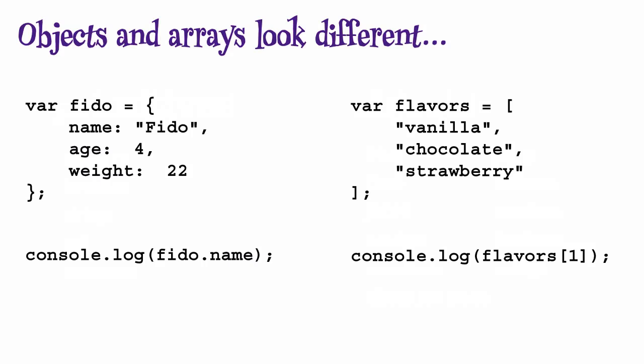But despite these differences in syntax, underneath, an array really is a special kind of object. It's an object that uses an index to access properties instead of a property name.